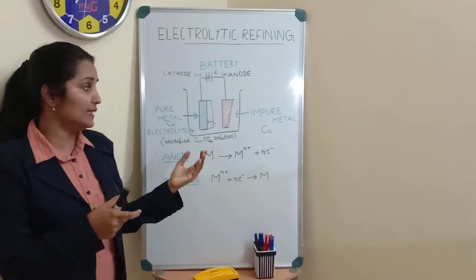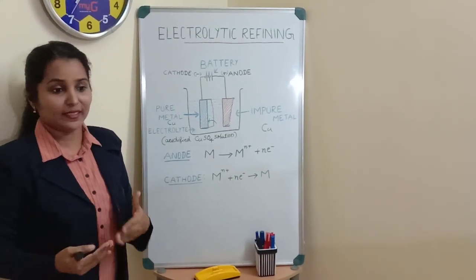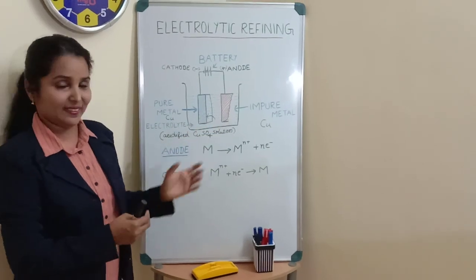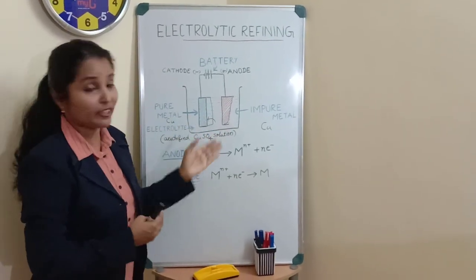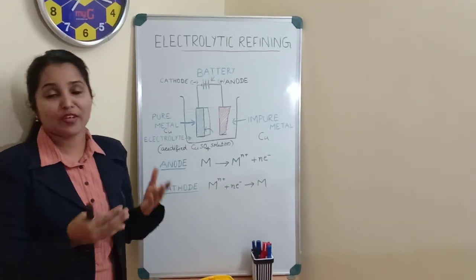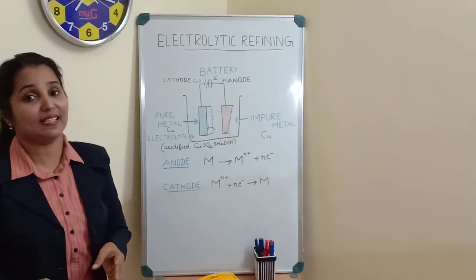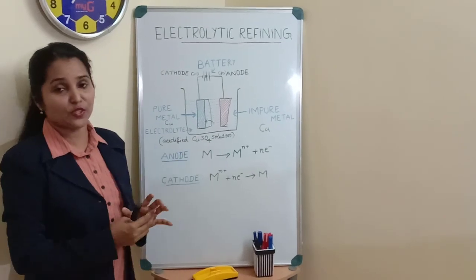The cost of this refining method can be recovered by the recovery of these elements. That means the cost can be met by recovering these elements present in the anode mud or anode sludge. Anode mud cannot be considered as just an impurity, but is also useful.